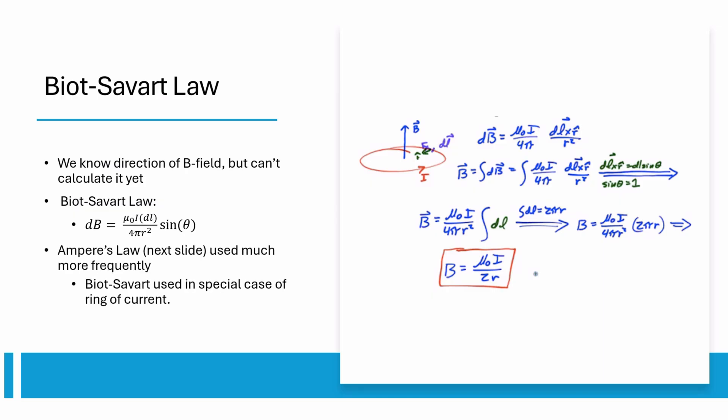There's one special case we have to use Biot-Savart's law when dealing with a ring of current. To the right we see how integrating the equation and substituting 2πr for dl gives us an expression for B-field at the center of a ring of current.